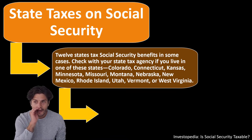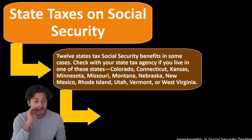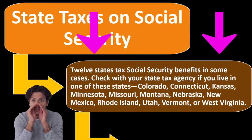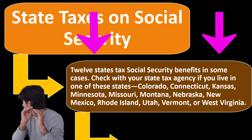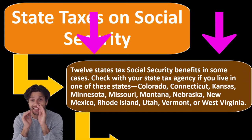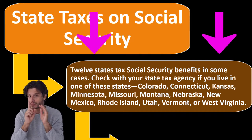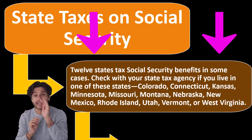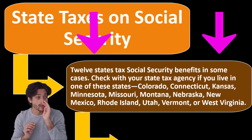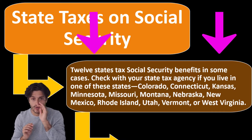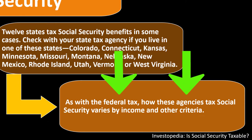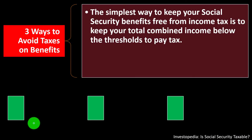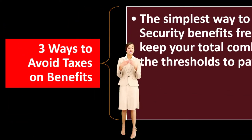Twelve states tax Social Security benefits in some cases: Colorado, Connecticut, Kansas, Minnesota, Missouri, Montana, Nebraska, New Mexico, Rhode Island, Utah, Vermont, and West Virginia. As with the federal tax, how these state agencies tax Social Security varies by income and other criteria. Check with your state tax agency if you live in one of these states.